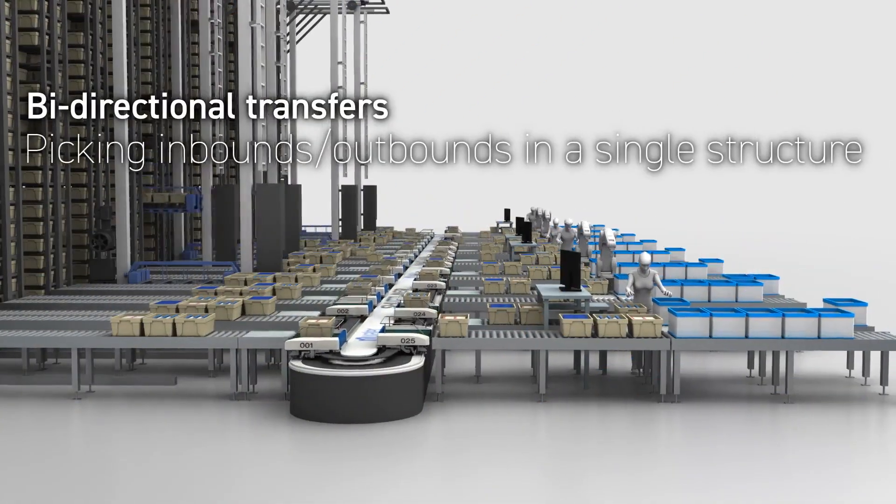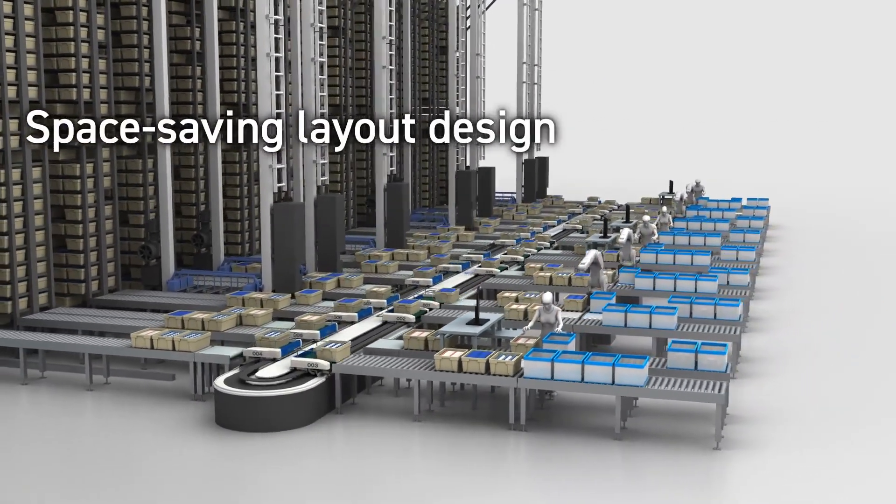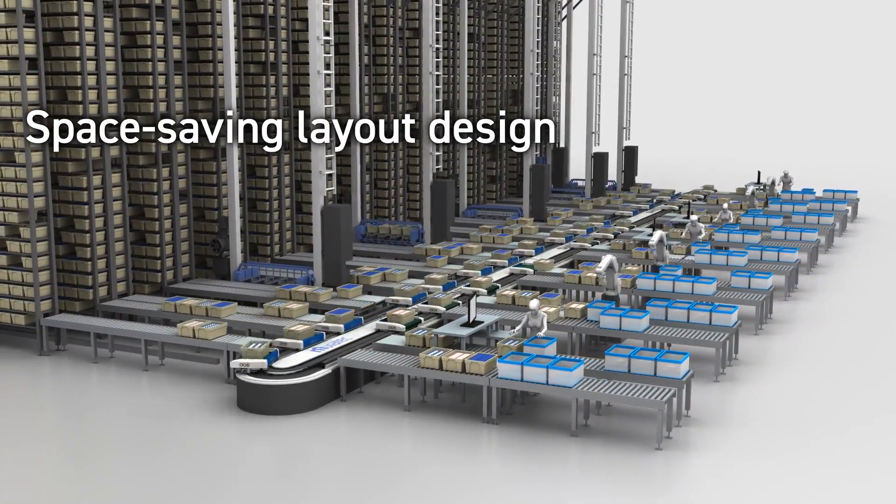The Shutliner transports two-way for in-and-out transfers in a single structure. Its small turning radius and right-angle installation enable a simple and space-saving layout.